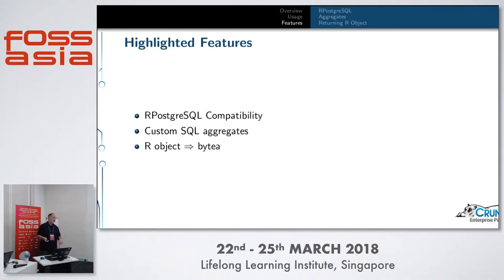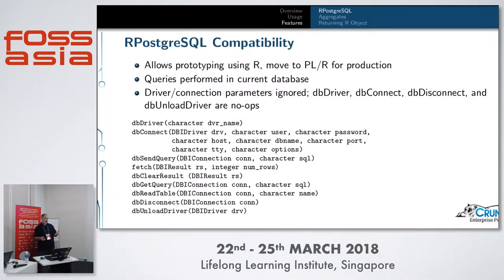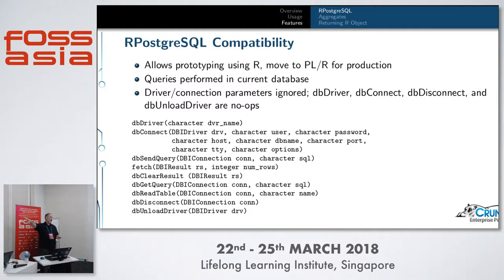One feature to highlight is R PostgreSQL compatibility. RPostgreSQL is a CRAN package that, when programming R on your desktop, lets you connect to a Postgres database, pull data out, and do your analysis. I built compatibility with the names of the functions in that package into PLR, so all the functions normally used in R to set up a connection, run a query, and get back results use exactly the same names in PLR.